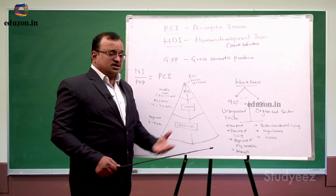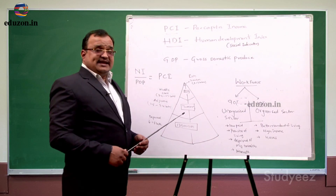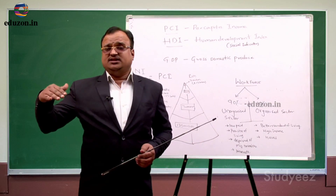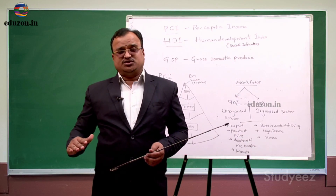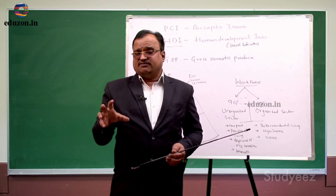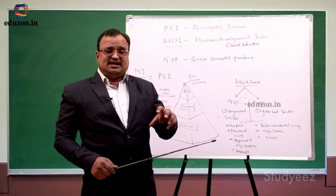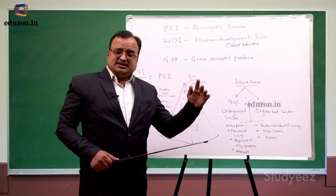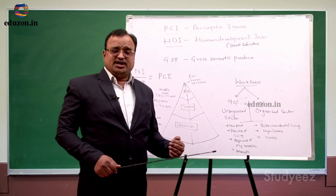Now, why exactly can we not take per capita income alone as an indicator of economic development? Per capita income shows us only the economic status involving the high, middle, and low sections of the population, so it cannot give a clear picture of whether the country is developed or developing. Whereas, the Human Development Index studies in detail and analyzes whether all citizens are within reach of literacy, education, health, sanitation, and other facilities.